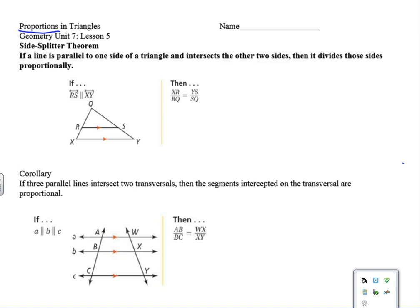So the first is called the side splitter theorem, and if a line is parallel to one side of a triangle and intersects the other two sides, then it divides those sides proportionally. Okay, so first of all, let's just recognize that this is different than a mid-segment. A mid-segment of a triangle is parallel, but this is not specifically a mid-segment. It's just any parallel line and here's how I look at this.